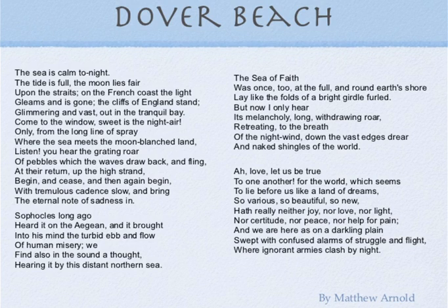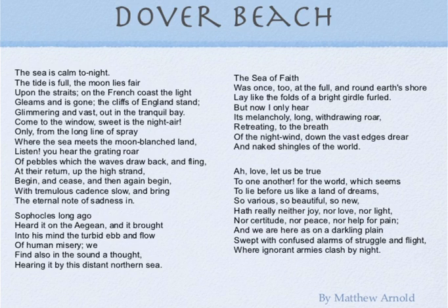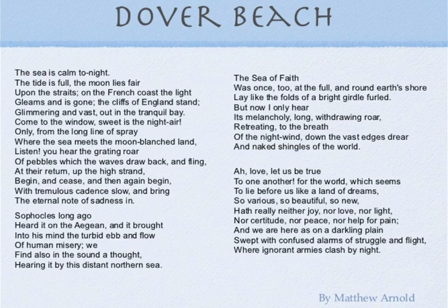The world before the speaker looks like a lovely dream on a moonlit night, but it is an enchanting illusion — with no certainty, peace, or joy. The world is a darkling plain where men fight in the dark, completely ignorant of whom they fight and what they are fighting for. I hope you have understood the poem. If you have any queries, post them on the classroom. For the next class, I am going to give a quiz on Dover Beach, so be prepared, try to understand its points, and write some notes. I will provide you with the material as well.